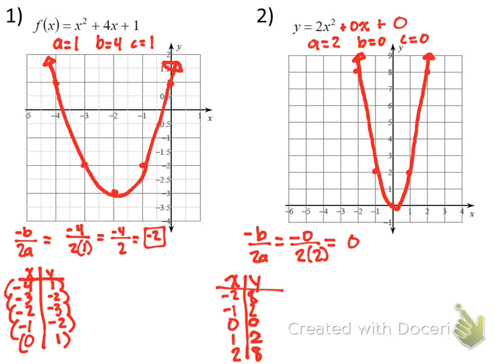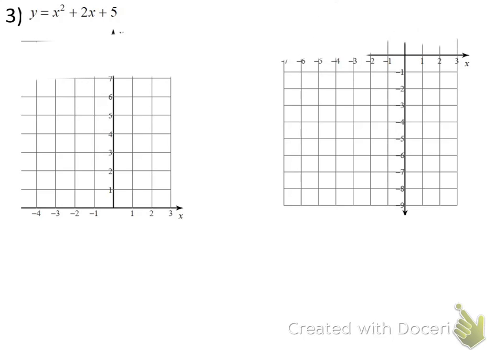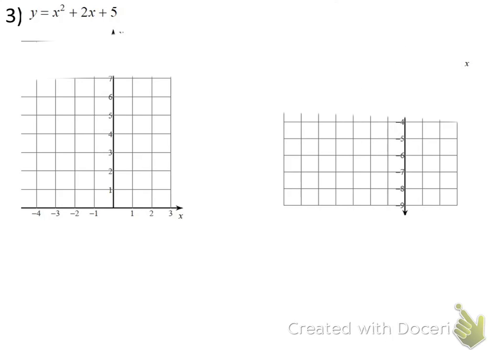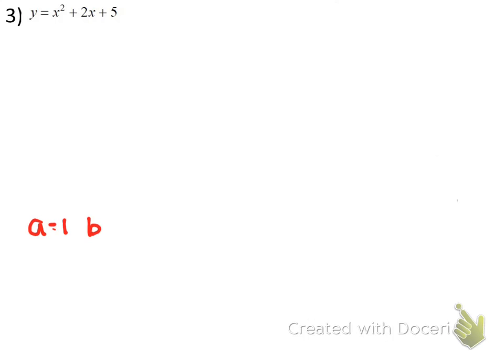Number 3. On the white side of your whiteboard, don't graph it yet — first write the problem down, then identify what your a, b, and c are. Everyone: your a is 1, b is 2, and c is 5.